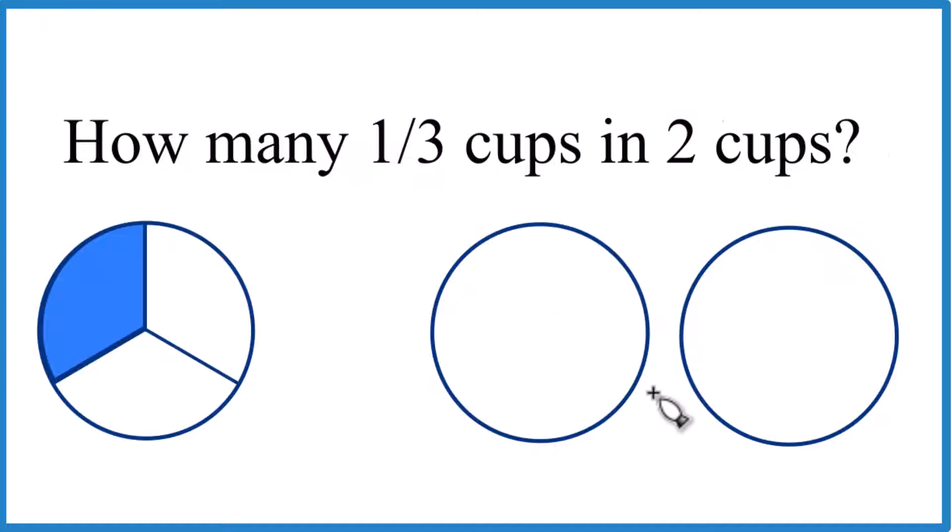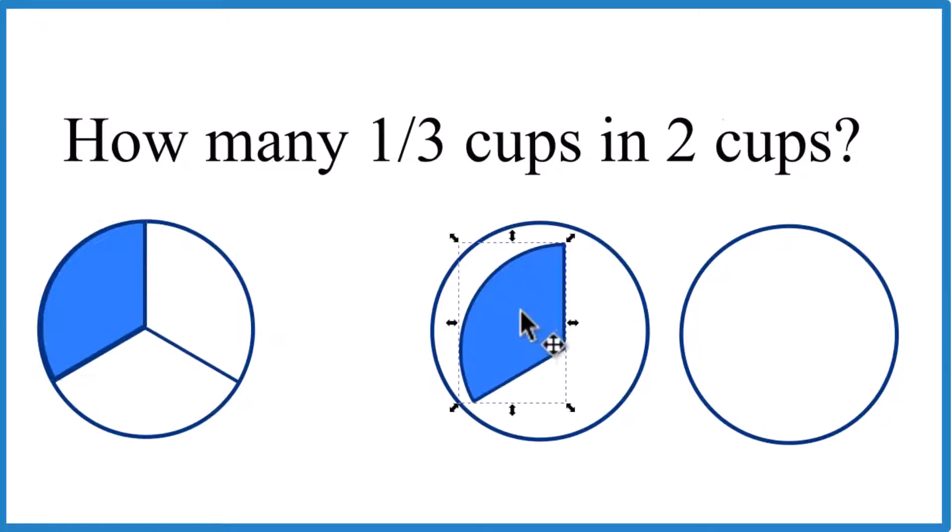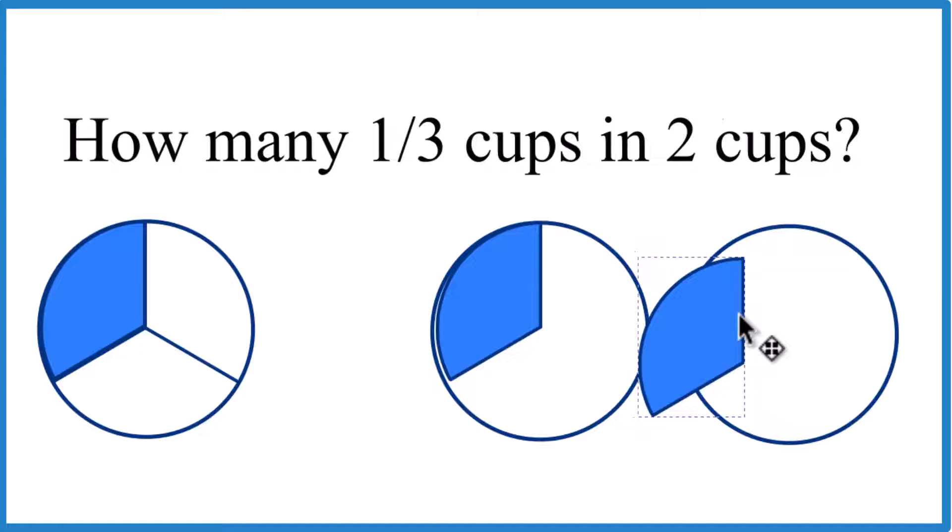So we could think of it this way. We could take this one-third cup here and copy it, and then paste it here. There's one of them. Paste it here. There's two.